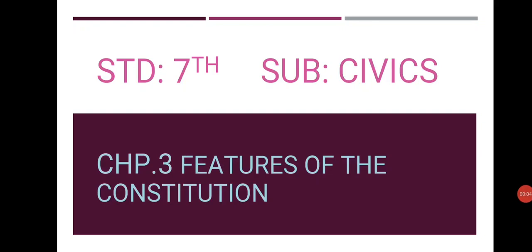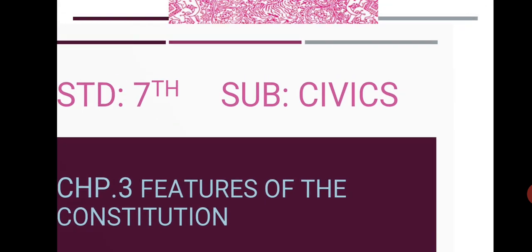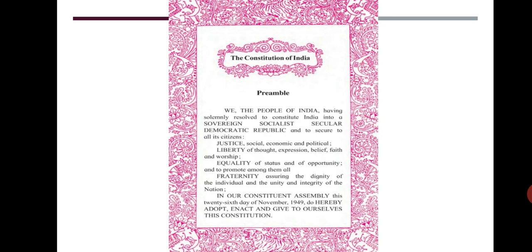Standard 7th Subject: Civics. Today let us learn the features of the constitution. In the last two lessons, we studied how our constitution was made. We studied its preamble and understood terms like Sovereign, Socialist, Secular, Democratic, and Republic. The goals expressed in the preamble are the characteristic features of a constitution as well. Apart from these, the constitution also has other features, which we shall try to understand in the present chapter.